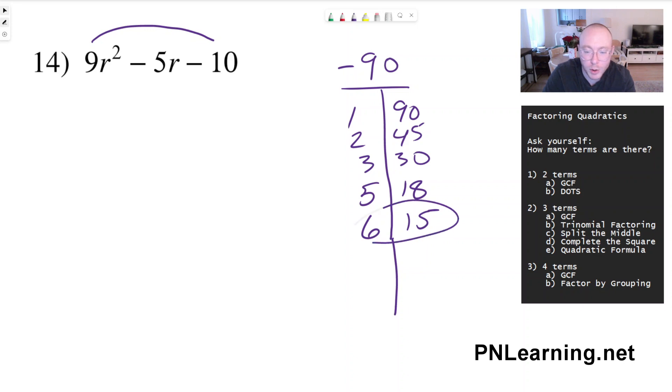We're not quite off by 5 yet, so let's keep going. 7 and nothing, 8 and nothing because we do not have 4 as a factor, 9 and 10 obviously.